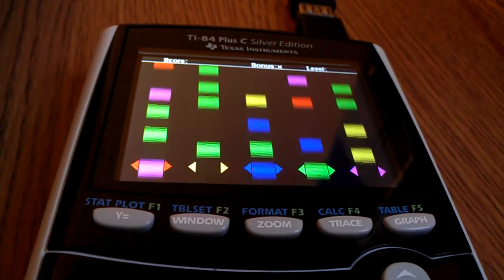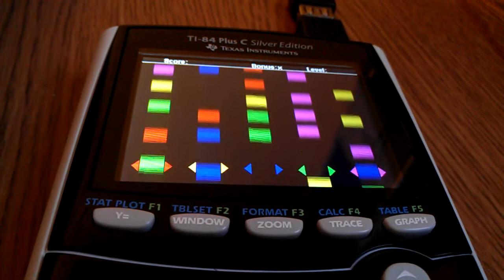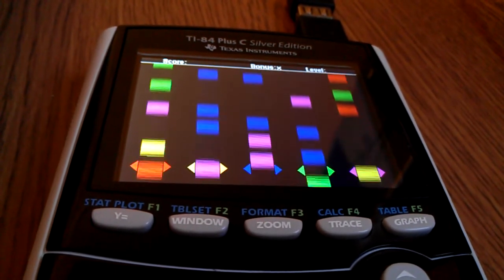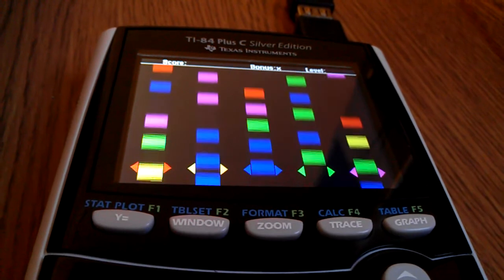I was thinking about making the left and right buttons change the color of the arrows. That way you can catch different color blocks in different columns. But that might get too complicated. I don't know. I'm about to test it out.